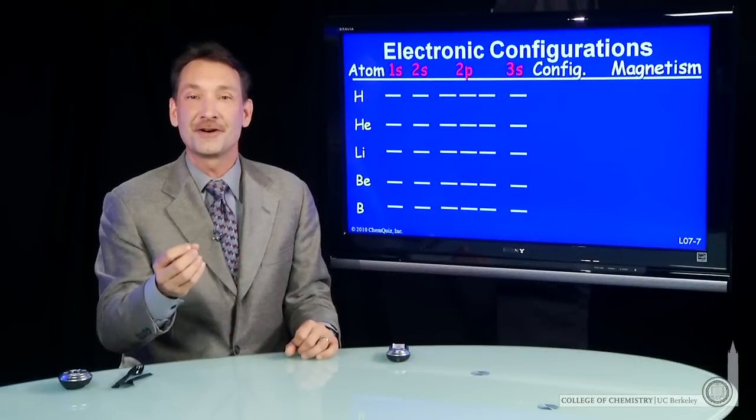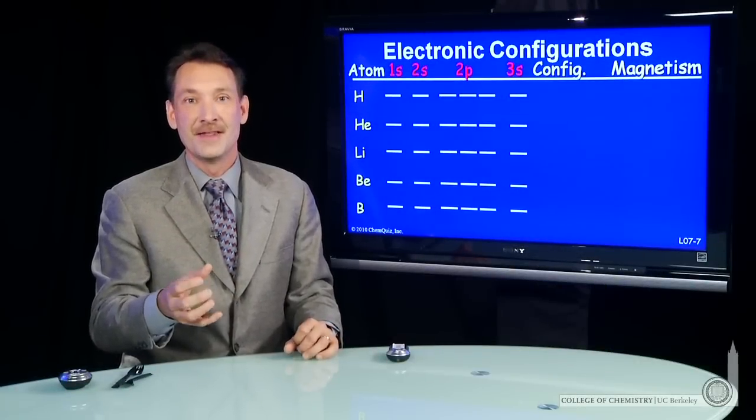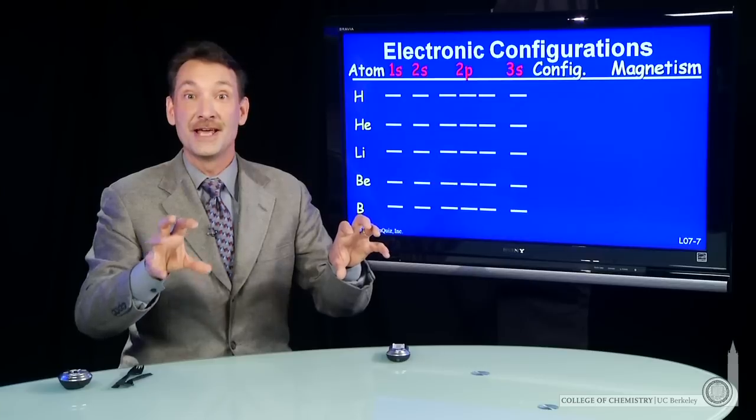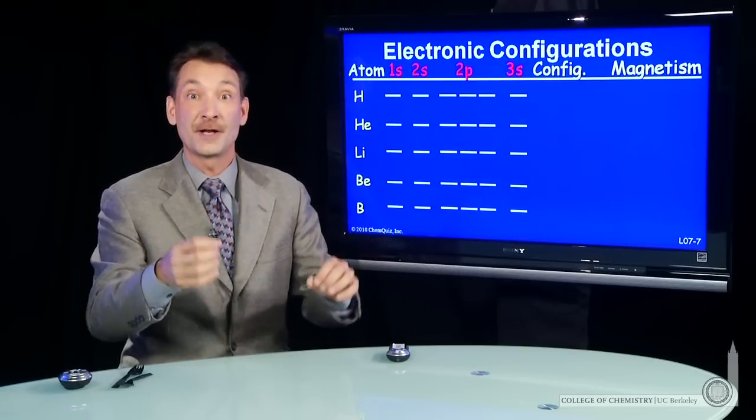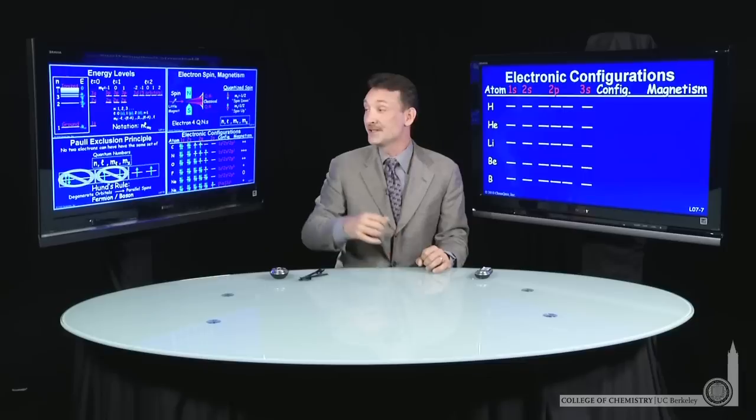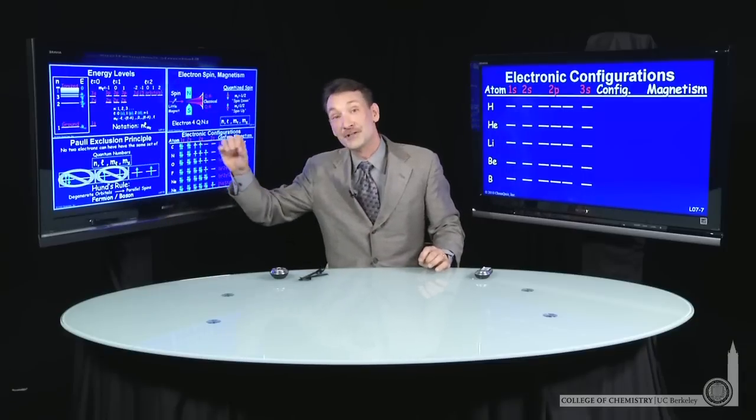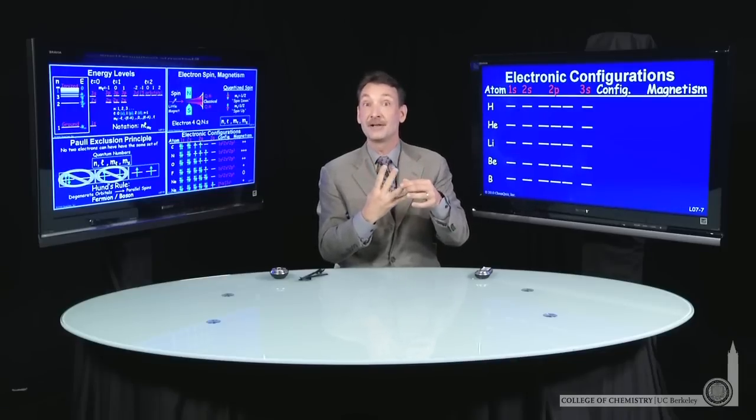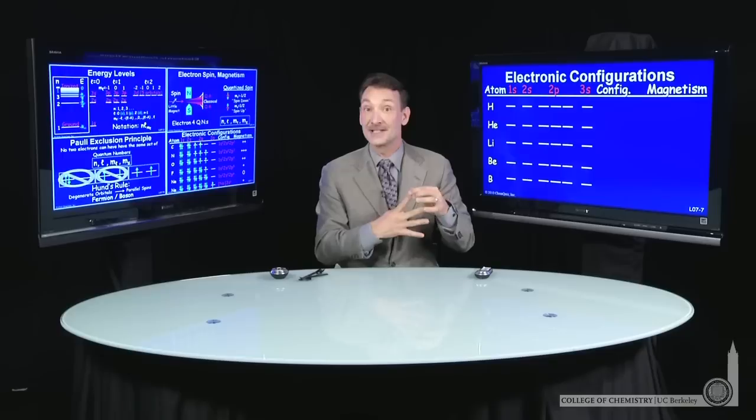Now we understand how multiple electrons can exist around an atom. They go into the various orbitals and fill them following some fairly specific rules. For instance, the Pauli exclusion principle says no two electrons should have the same four quantum numbers. At least one quantum number has to be different: m sub s, m sub l, n, or m sub l has to be different.